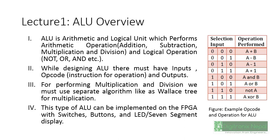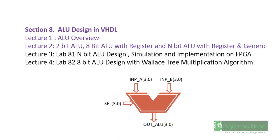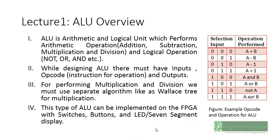In Lecture 1, the ALU overview shows that the ALU performs arithmetic operations — addition, subtraction, multiplication, and division — and logical operations such as AND, OR, inverting, XOR, XNOR, and more. When designing an ALU, we must have inputs, a selection code (opcode), and outputs. These three main components were seen in the previous block diagram: input, selection, and output. The selection determines the operation.